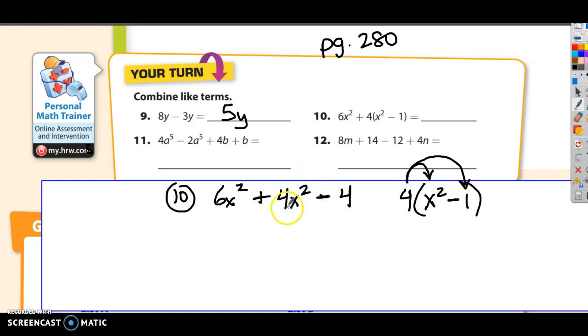So how did I get all these numbers? This number I got by doing 4 times x squared. And this number I got by doing 4 times 1. And the subtraction sign I just bring over. So now what terms do I have that I can combine? It's the x squared. Like terms are when we have the same variable raised to the same power.